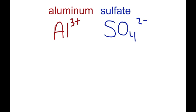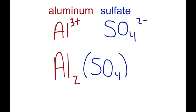The least common multiple of 3 and 2 is 6. In order to get a positive 6 charge, we'll need two aluminum ions. And to get a negative 6 from the sulfate ions, we're going to need three sulfates. Sulfate is a polyatomic ion, so we have to use parentheses whenever we have more than one.